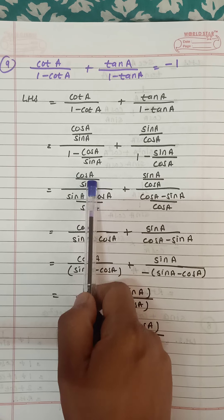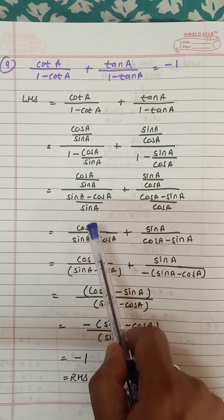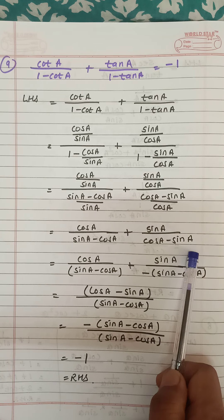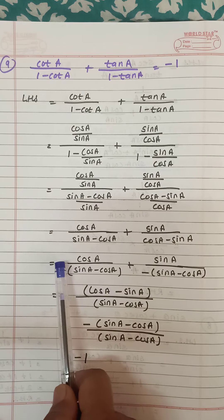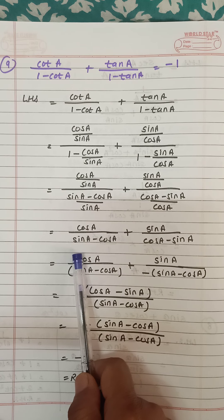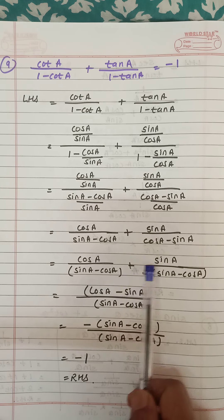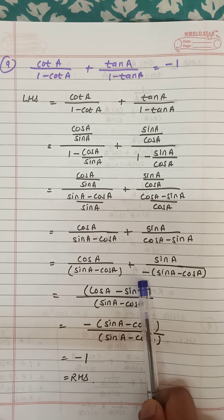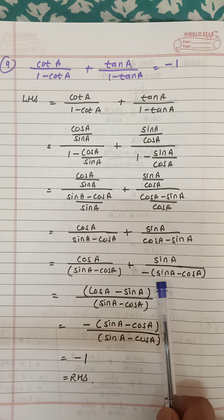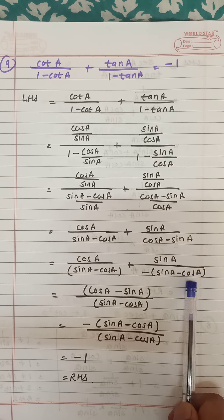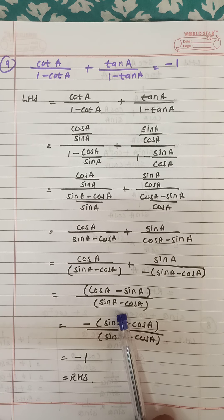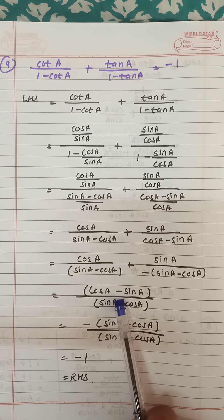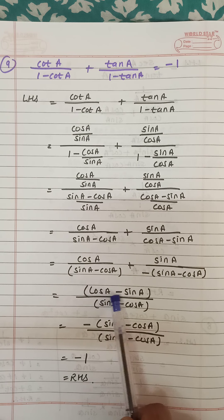Both denominators are the same so they get cancelled — whatever is in the numerator is written over here. Now we see both denominators are the same but with opposite sign: this is sin a minus cos a, and this is minus sin a plus cos a. If we remove the minus sign outside, it becomes sin a minus cos a. Both denominators are now the same, so we copy one time. This is cos a — the plus and minus become minus — this is sin a.